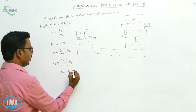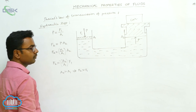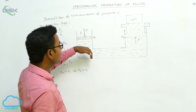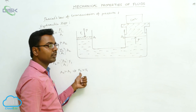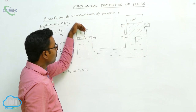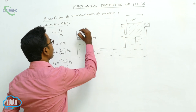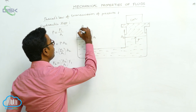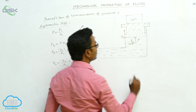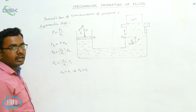Since A2 is greater than A1, it follows that F2 is also greater than F1. This means the small force applied on the piston of smaller area is converted into a large force F2 on the piston of larger area. In this way, using Pascal's law of transmission of pressure, the hydraulic lift works.